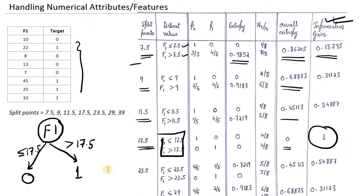That concludes our discussion on how to create a decision tree when we have a numerical attribute. In the next video, we will solve a numerical example having both categorical and numerical attributes. Thanks for your time.